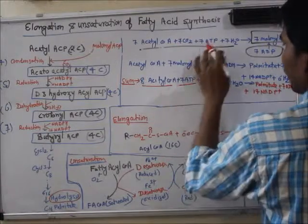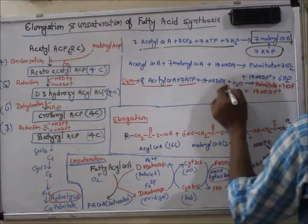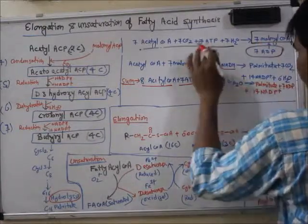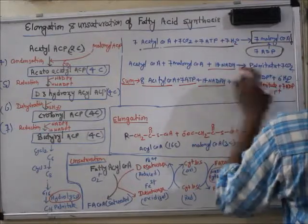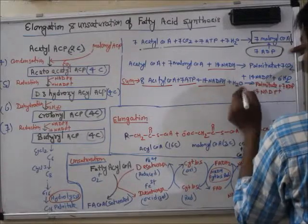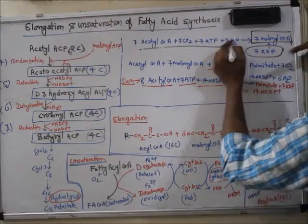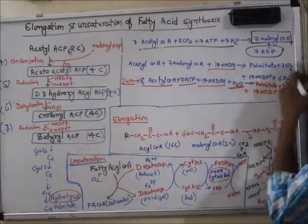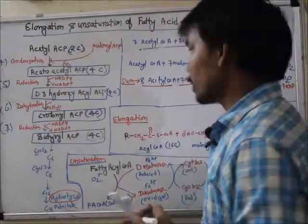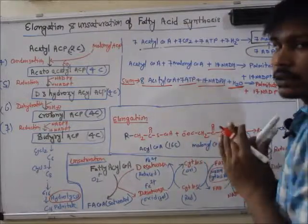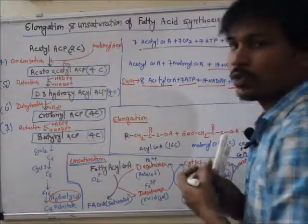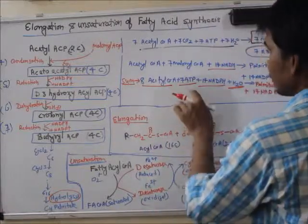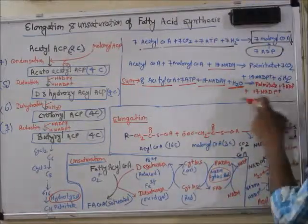After cancelling out water molecules — seven H2O here and six H2O from hydrolysis — one H2O remains. So the overall summary: eight acetyl-CoA, seven ATP, 14 NADPH, and one H2O are required to synthesize palmitate. This is the key answer: eight acetyl-CoA, seven ATP, and 14 NADPH are needed for palmitate synthesis.